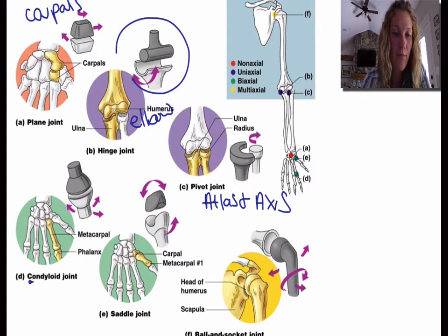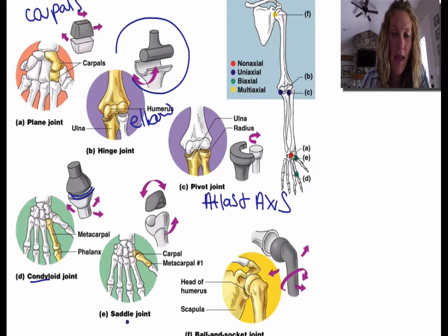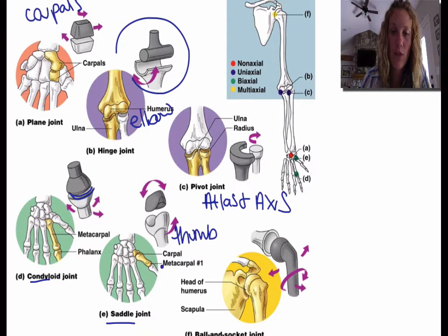The condyloid or condylar joint — an example would be the knuckles. A saddle joint — an example of that would be your thumb. And then ball and socket — you can take the example of your shoulder.